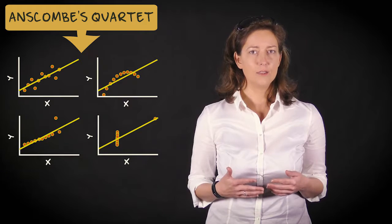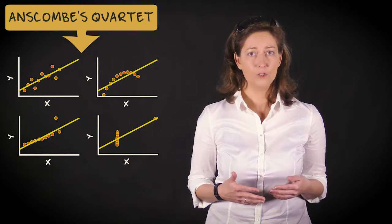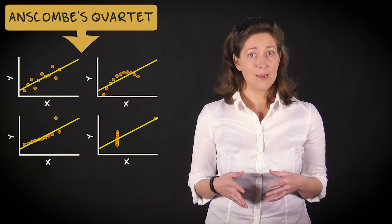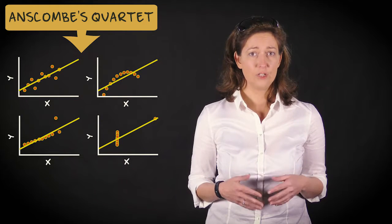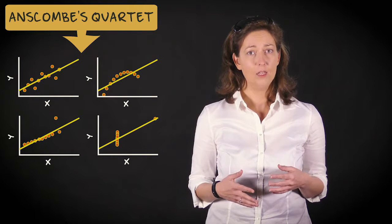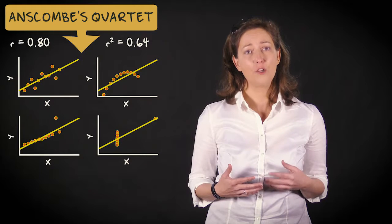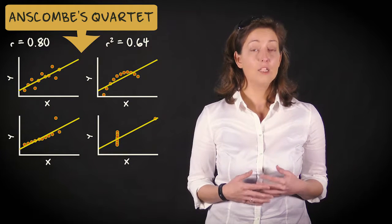Anscombe created different datasets that show linear and non-linear patterns, but that all result in the same means, standard deviations, and correlation for x and y. In all cases, Pearson's r is 0.8 and r-squared is 0.64.